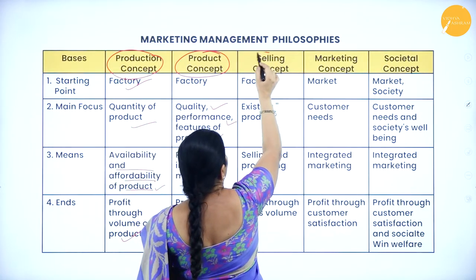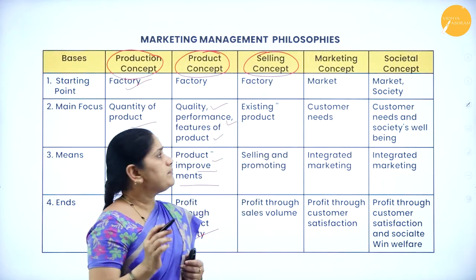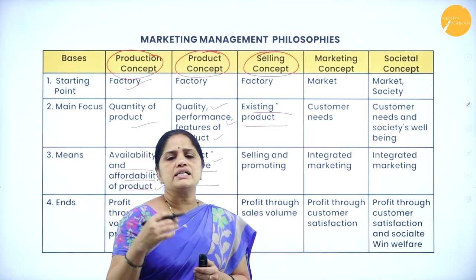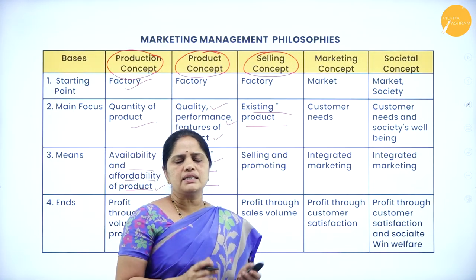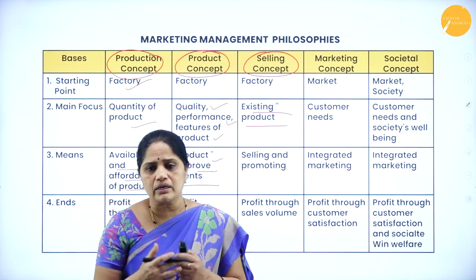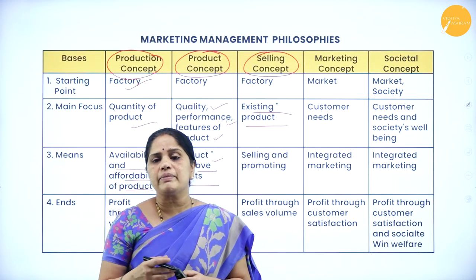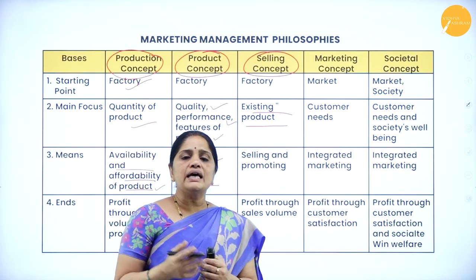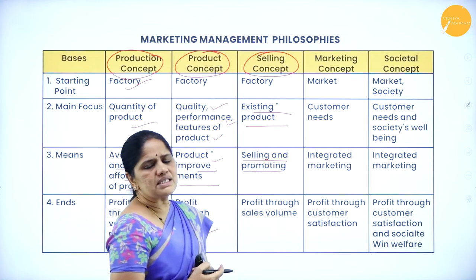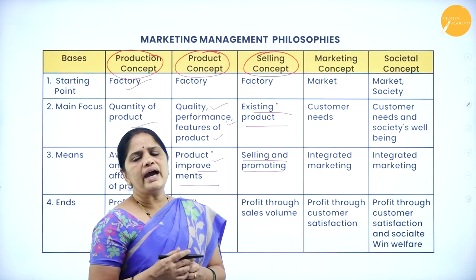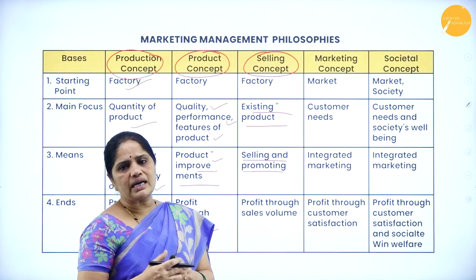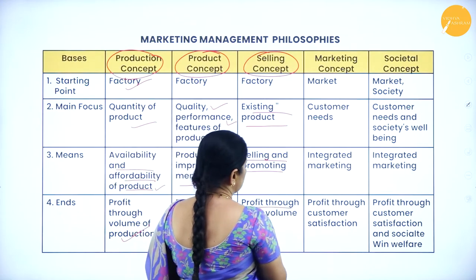The third concept is the selling concept. Here, whatever is existing in the factory has to be sold — if goods are produced and kept in the go-down, it is of no use. Unless you sell the products, you cannot get back your money. Whatever is produced has to be sold through selling and promotion — proper advertisement and promotional activities are taken up to sell the products, and profit comes through the sales volume.